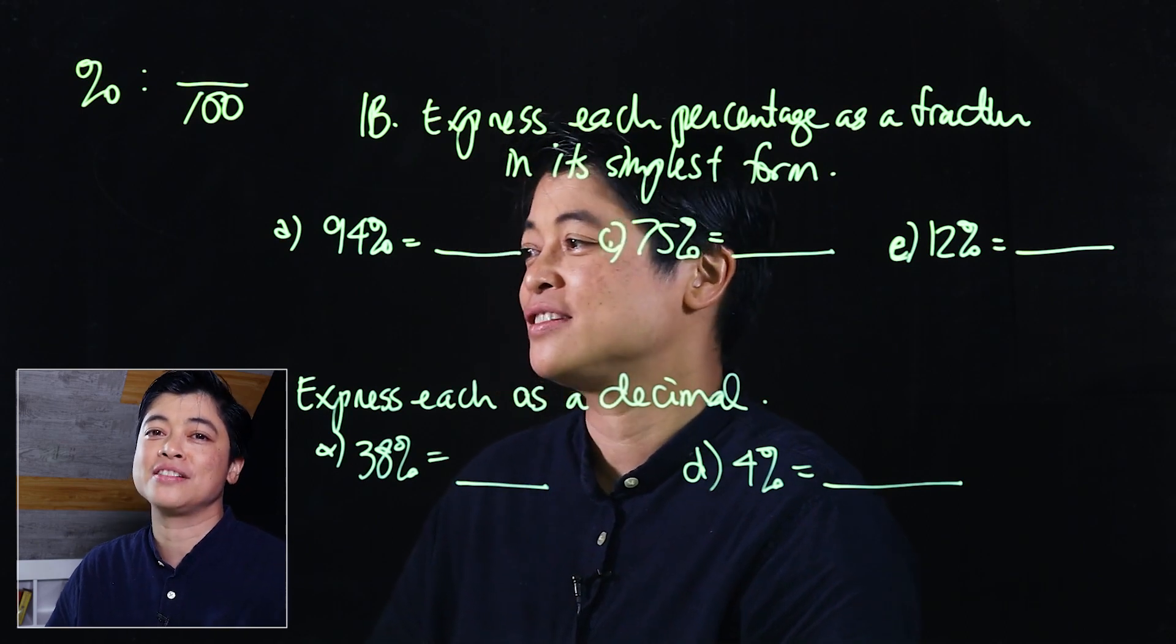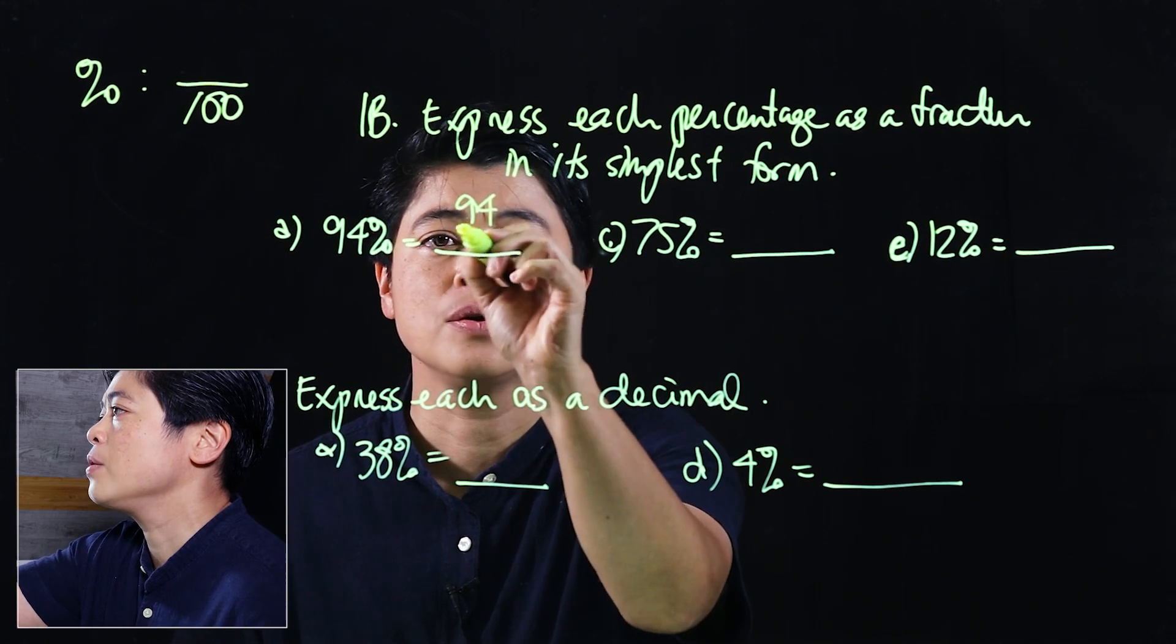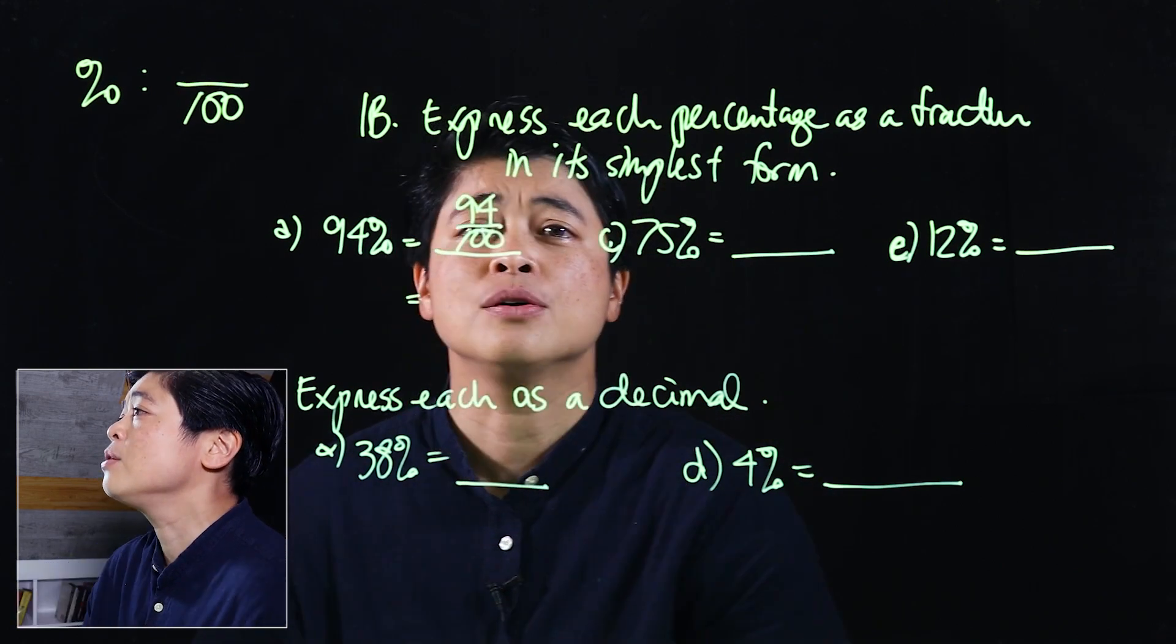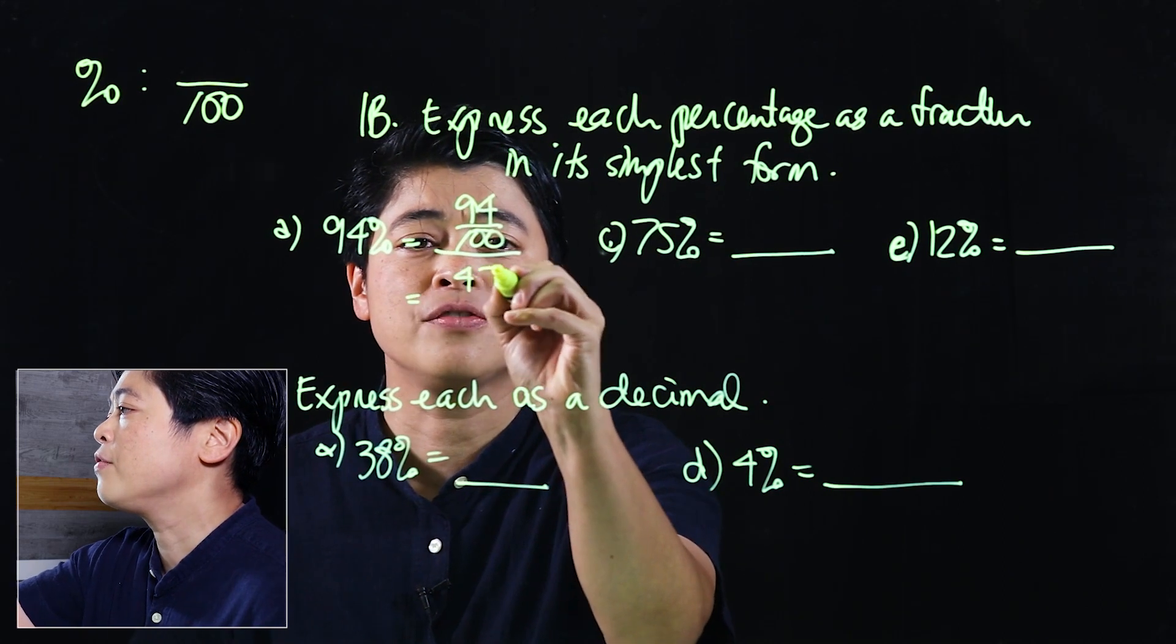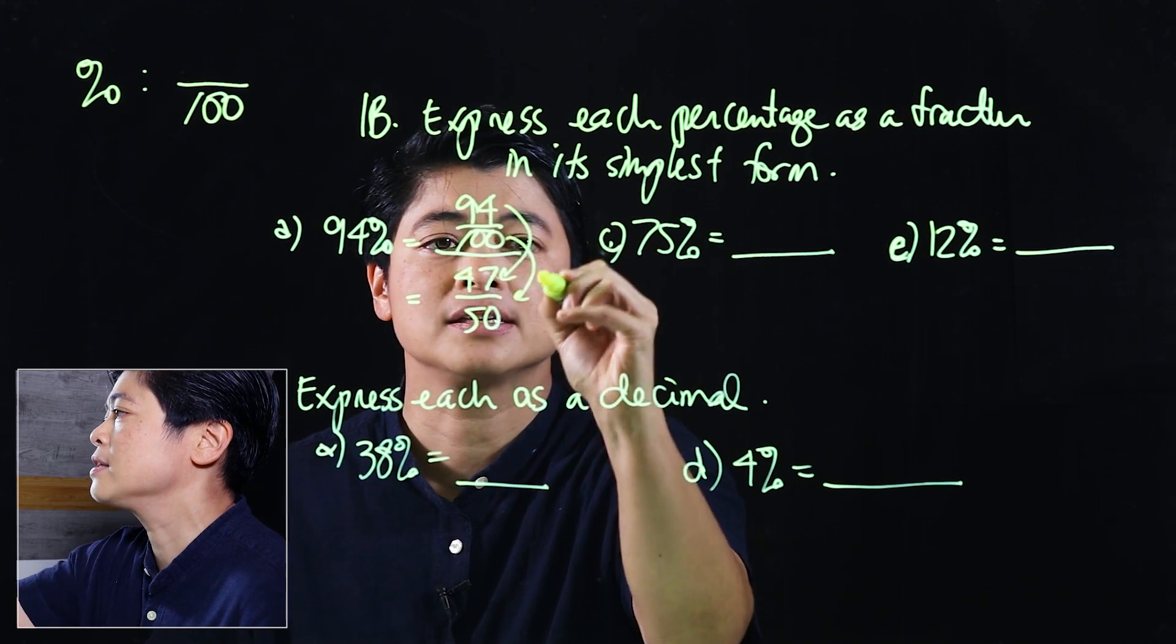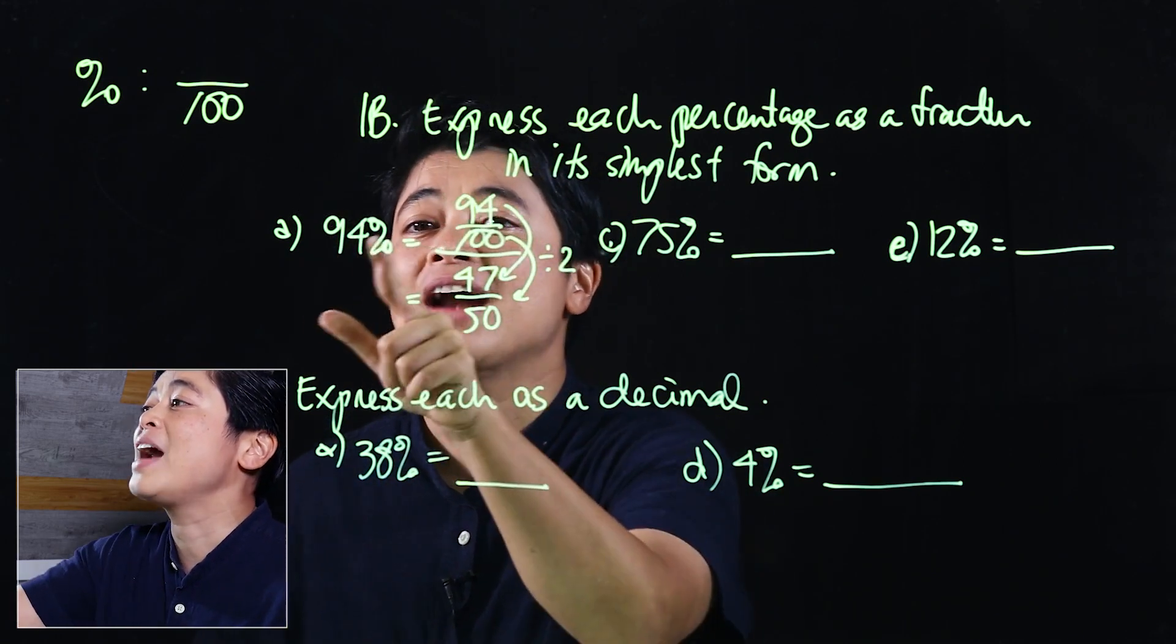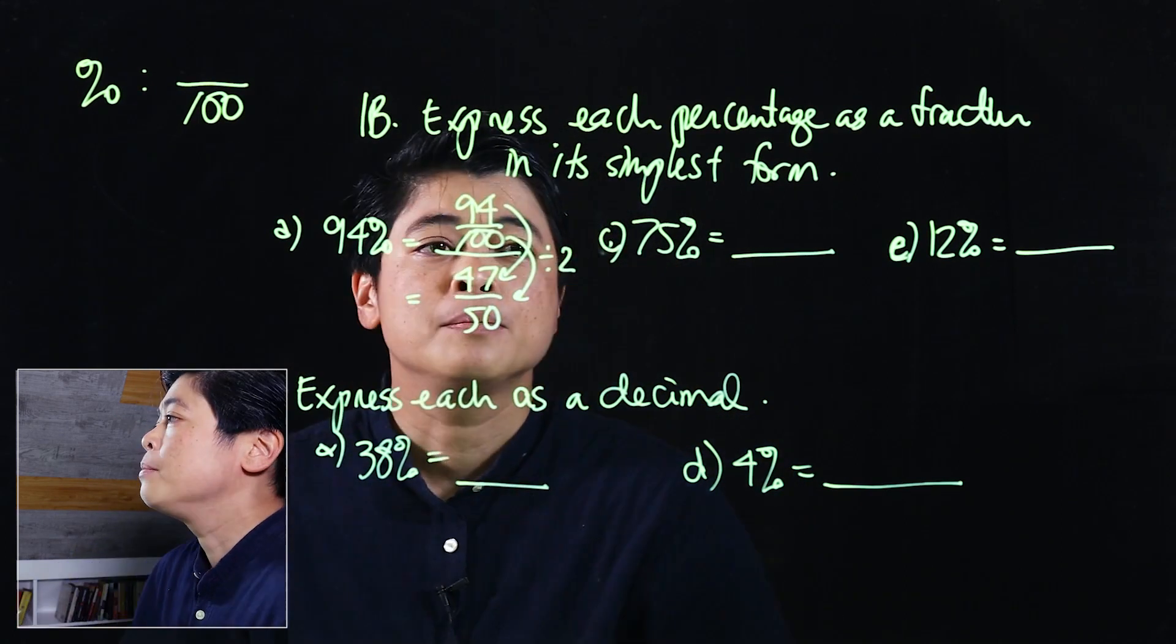94% is 94 over 100. I know those are both even so that means I can divide those by 2. If I divide by 2 that will be 47 over 50. I'll make my symbol like that to show dividing by 2. I can't reduce that further, which means that's the fractional form of 94% in its simplest form.